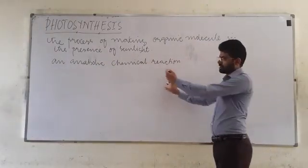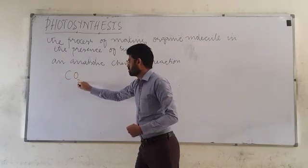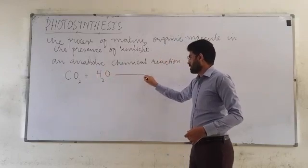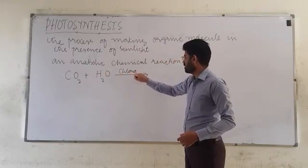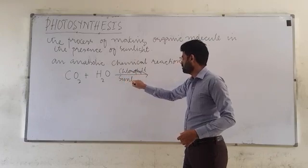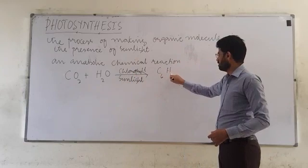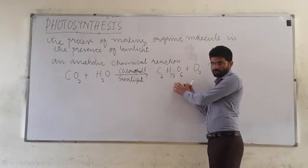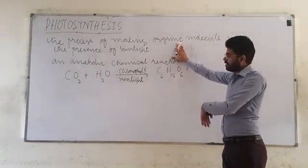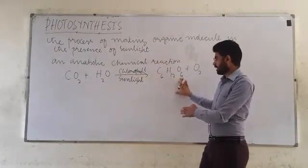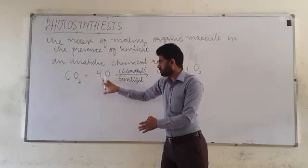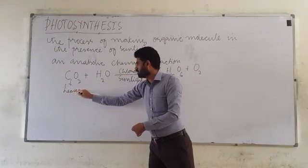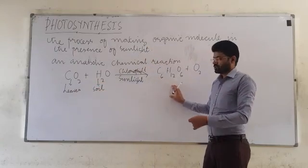An anabolic chemical reaction, we are saying this as anabolic because of this reason, that plant uses carbon dioxide from the atmosphere, it uses water from the soil, and by the help of chlorophyll and sunlight, it makes its organic molecule called glucose, with the byproduct oxygen. So this is why this process is called making of organic molecule from the inorganic molecule. Because plant is synthesizing an organic molecule from these two inorganic molecules. This is actually taking from the environment, from the atmosphere. This is coming from the soil.